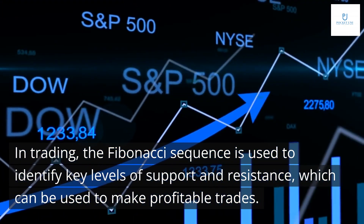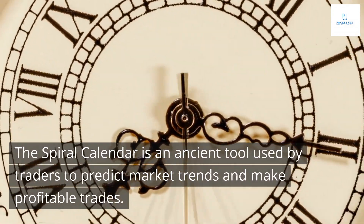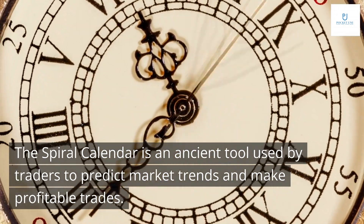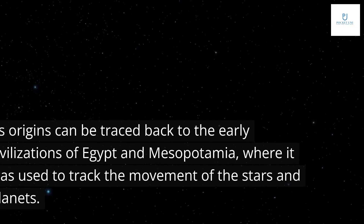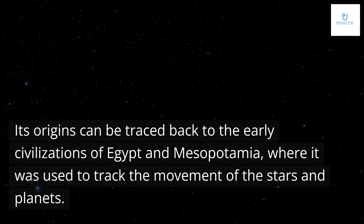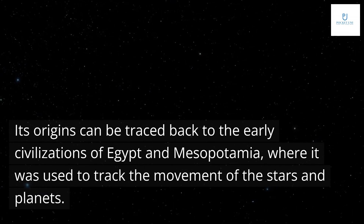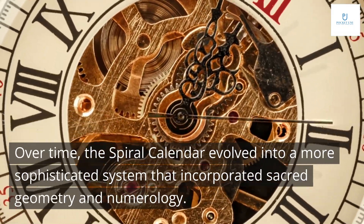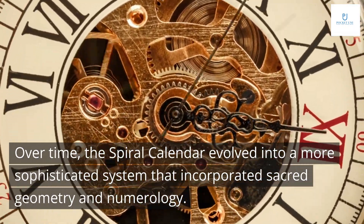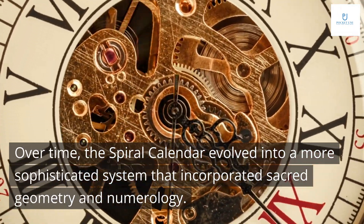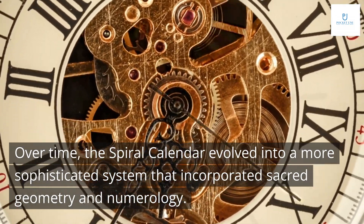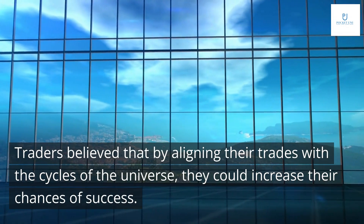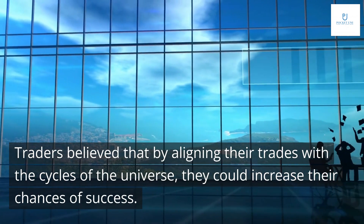The Spiral Calendar is an ancient tool used by traders to predict market trends and make profitable trades. Its origins can be traced back to the early civilizations of Egypt and Mesopotamia, where it was used to track the movement of the stars and planets. Over time, the Spiral Calendar evolved into a more sophisticated system that incorporated sacred geometry and numerology. Traders believe that by aligning their trades with the cycles of the universe, they could increase their chances of success.